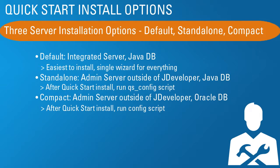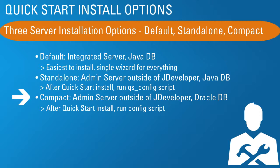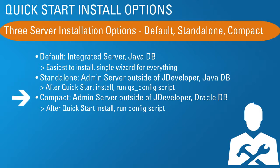Quick start install options. There are no options for the default — you just do a single click and install. But there are three terms to remember: default, standalone, and compact. By default, you get an integrated server that uses Java DB — a compact database installed and configured automatically, single wizard, basically a single click. The standalone is the same configuration as default, but the domain is outside of JDeveloper — it still uses Java DB, and after the quick start install you just run an additional script. Compact is also a single admin server, but the big difference is that it uses Oracle database. After the quick start install, you run the config script called config.command.